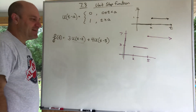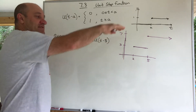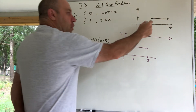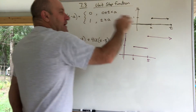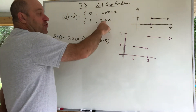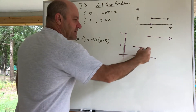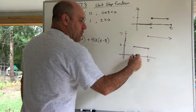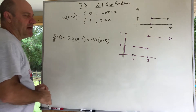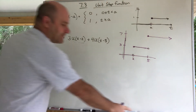So the function is zero, then at t = 2 it turns on to be a 3, and at t = 5 you add 4 which makes it 7 — and it stays at 7 the rest of the way. As for the little details of open and closed circles: technically one end is open and the other is filled in, since it's less than a for zero and greater than or equal to a for one. But honestly those details don't matter that much to me.